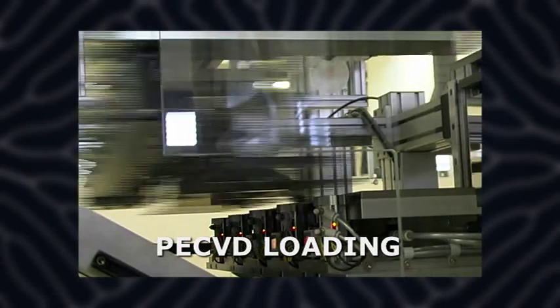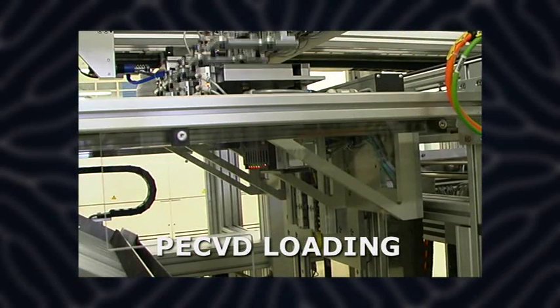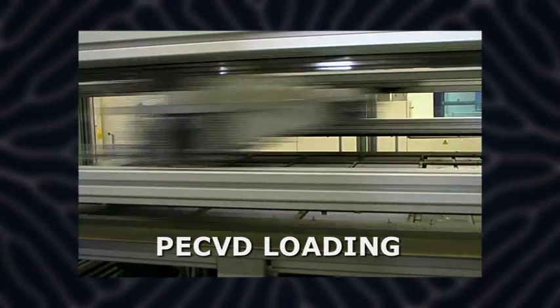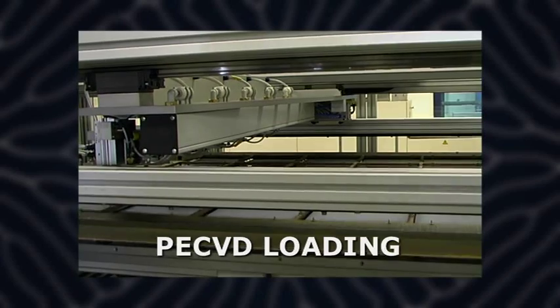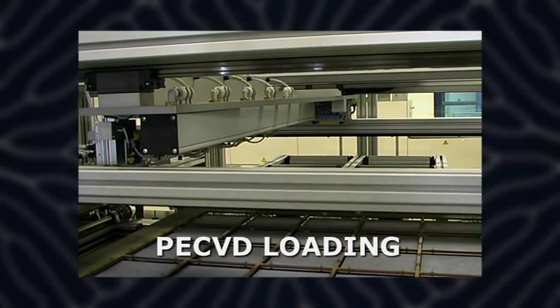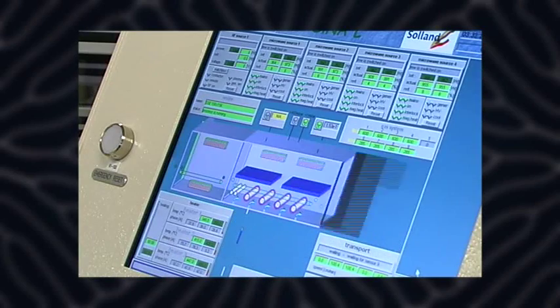The result is an anti-reflection layer that reduces the reflection of sunlight, especially in the absorption peak of solar cells. This means the red part of the light spectrum. The layer performs less in the blue part of the spectrum, which is why the blue light is reflected and makes the cell look blue.